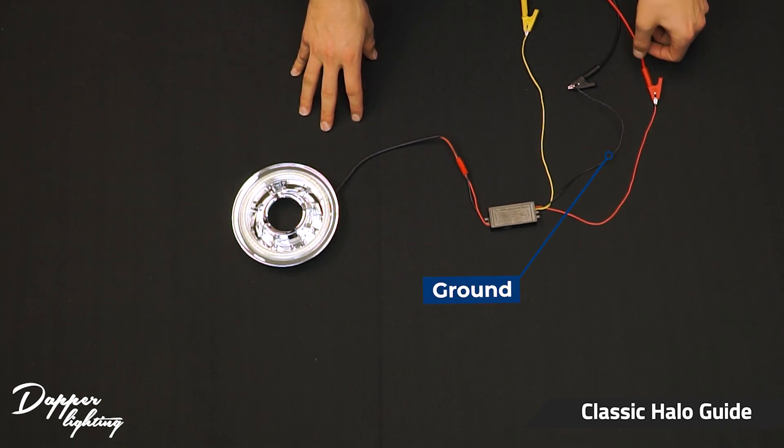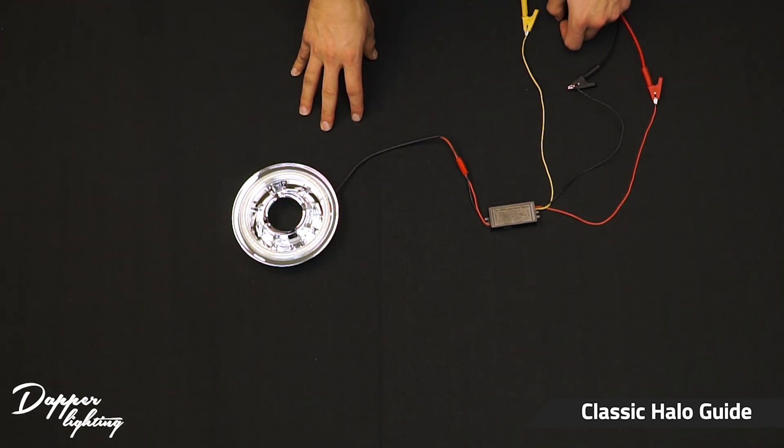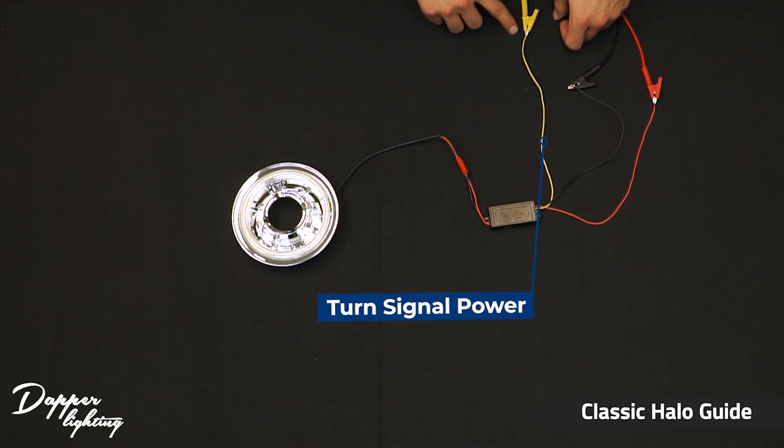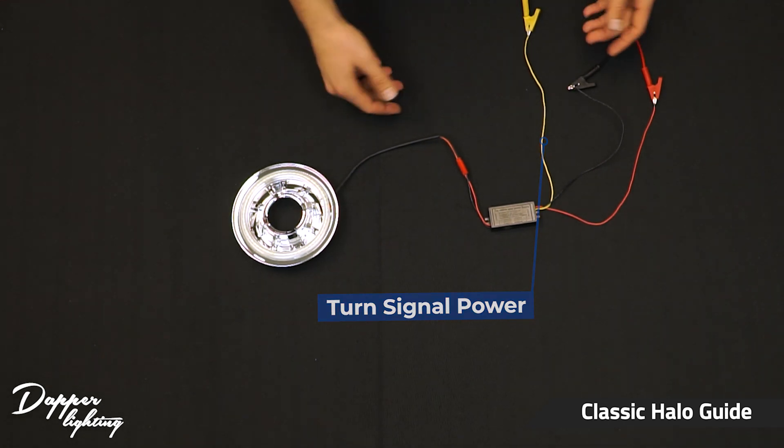The black is going to tap into a good solid ground, and then the yellow is going to go to the positive on your turn signal. It has built-in priority so when you turn on the turn signals it automatically switches over to blinking amber.